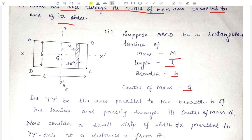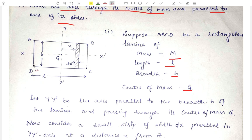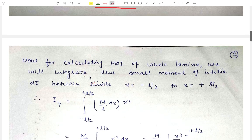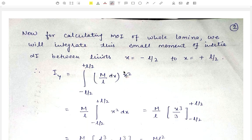Now what will be the limits? As we can see clearly, the YY' axis is at the center of the length side. To the left of this YY' axis there is a length of L/2, and the same L/2 is the length to the right side of this YY' axis. Therefore the limits of integration will be x = −L/2 to x = +L/2, that is from side AD to side BC.